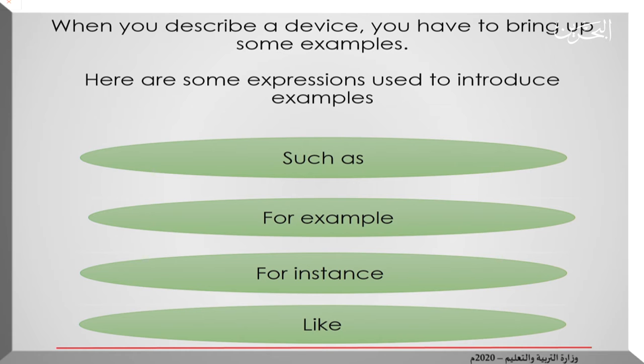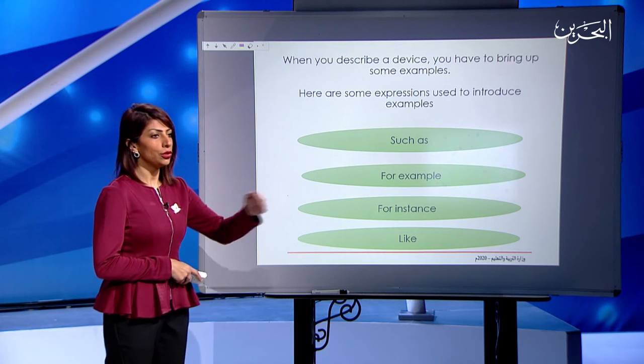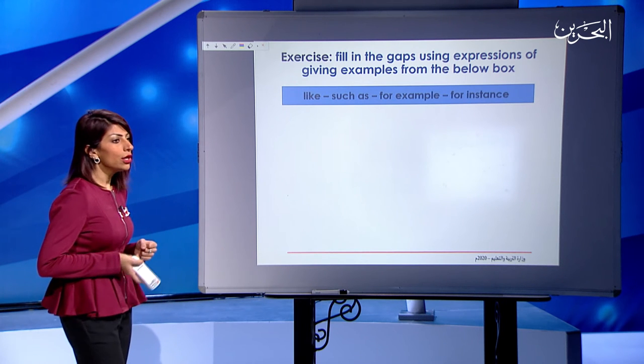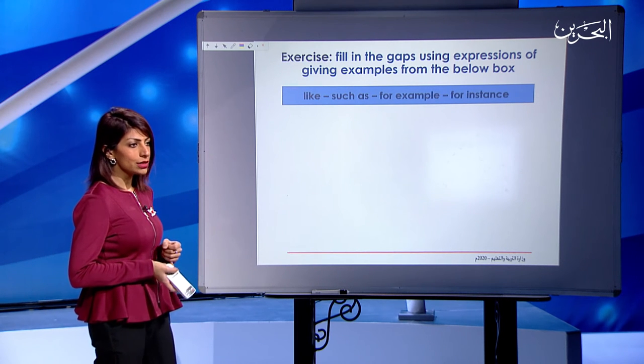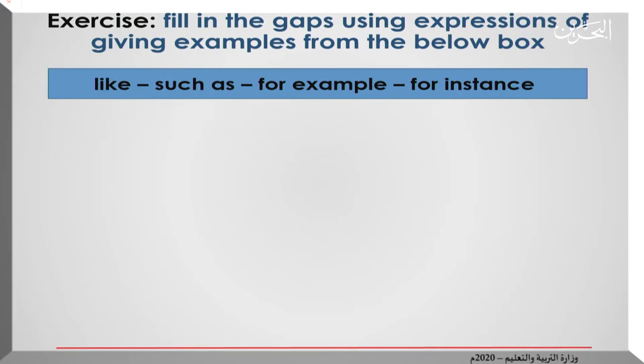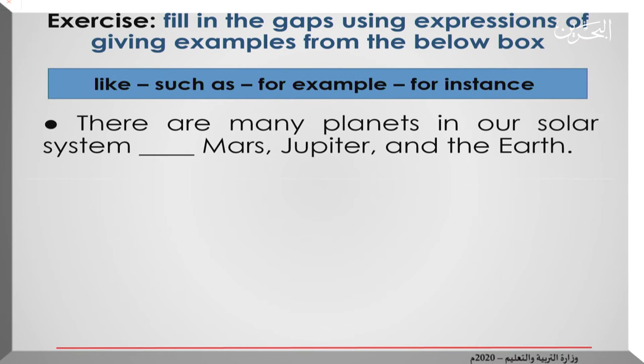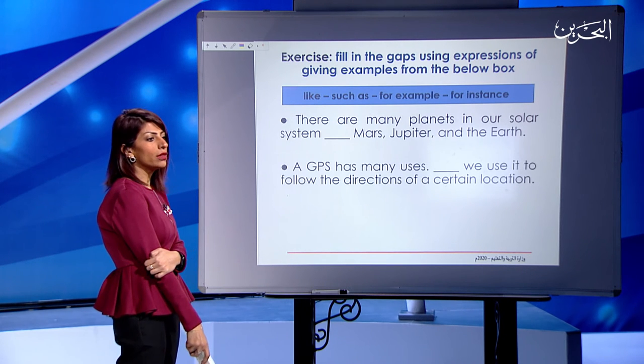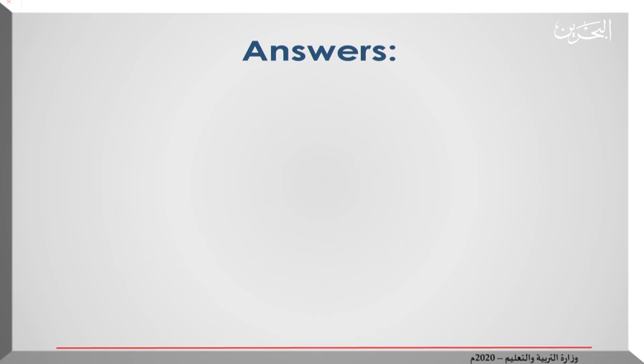Now I'll give you a very simple exercise where I need you to fill in the gaps using expressions of giving examples from the below box. You have four expressions: like, such as, for example, for instance. The first one is: there are many planets in our solar system, blank, Mars, Jupiter, and the Earth. Which one suits the blank the best? You do the same with the second one, the third one, and then we will check the answers together. I'll give you one minute. Try to do it.